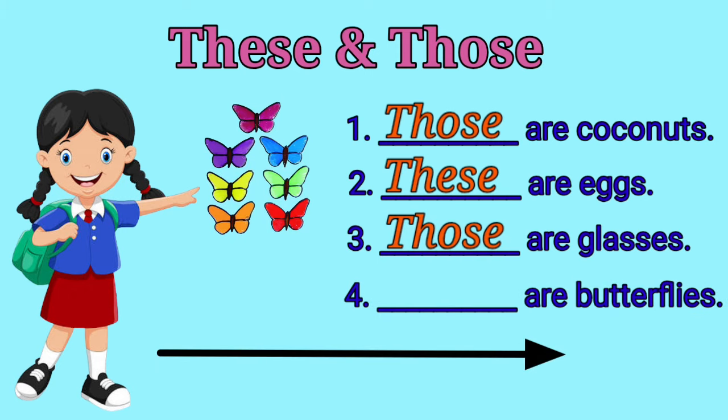Number 4, dash are butterflies. Children, are the butterflies far from me? No, it's near to me, right? So, what shall we use now? Very good, these are butterflies.